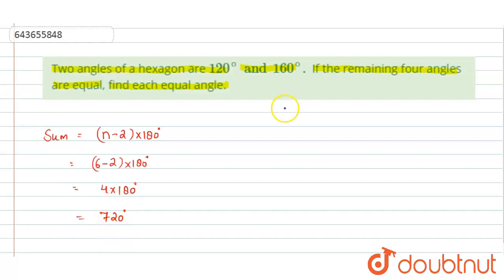Now according to the question, two angles are given to us and four angles are equal. Now we can just assume the four equal angles be x. Let the equal angles be x. Now if there are four equal angles,